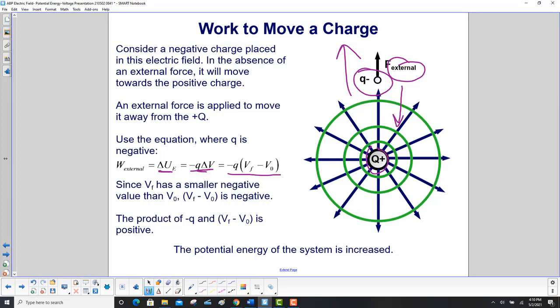Therefore, the product of negative Q and V minus V0 is positive. The potential energy of the system is increased.